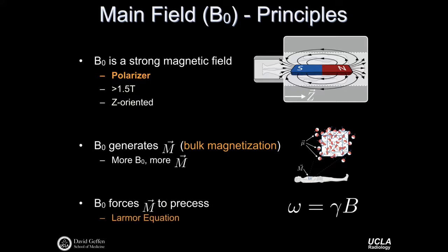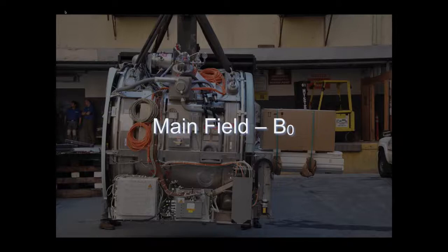B0 also forces the bulk magnetization to precess. The Larmor equation tells us that the presence of a large magnetic field B, given a gyromagnetic ratio gamma, informs us of the underlying Larmor frequency of the bulk magnetization.